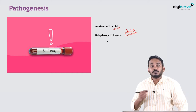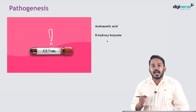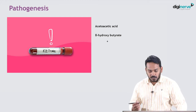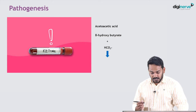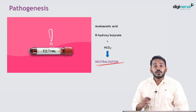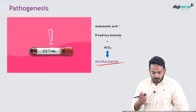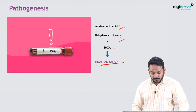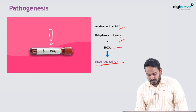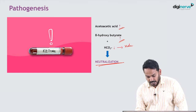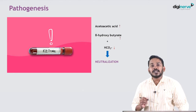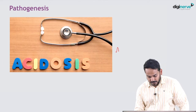To maintain the pH of plasma, acetoacetic acid and beta-hydroxybutyric acid are neutralized by combining with bicarbonate. When more acetoacetate and beta-hydroxybutyrate are formed, more bicarbonate is utilized, resulting in a reduction in bicarbonate levels, and this results in the development of acidosis.